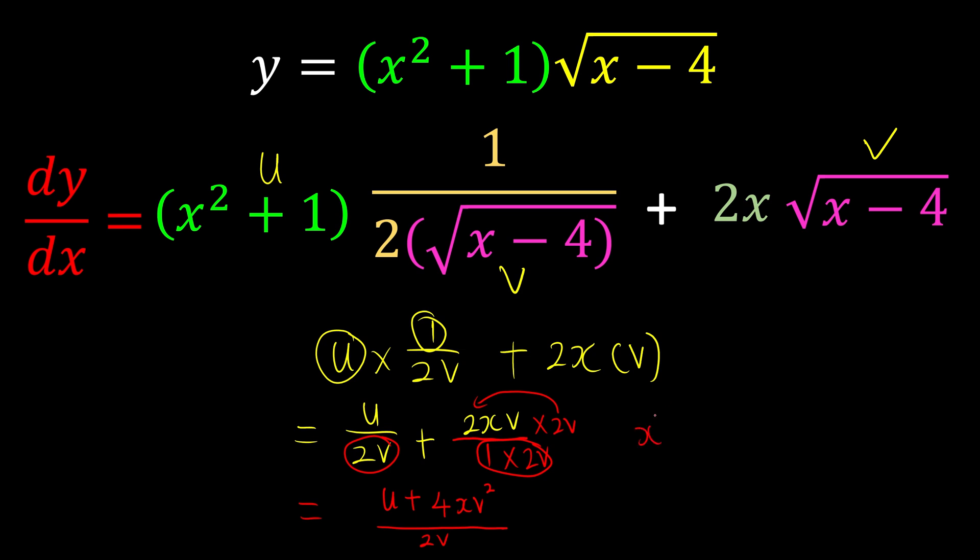So what is u? u is x² + 1. What is 4xv²? Plus 4x. What is v²? v is √(x - 4). If we square it, we have just x - 4.